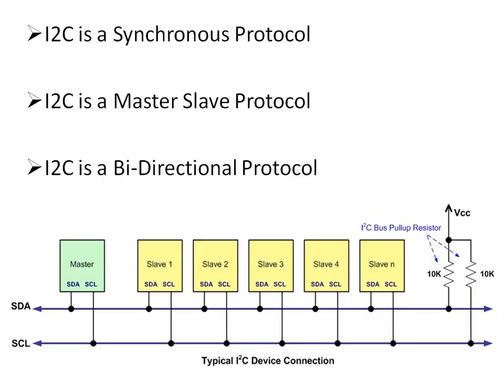I2C is a synchronous protocol, which means that all devices connected on the bus share a common clock. This clock is generated by the master. I2C is also a master-slave protocol in which the master controls the communication and generates the start and stop commands, and sends queries to the slaves.